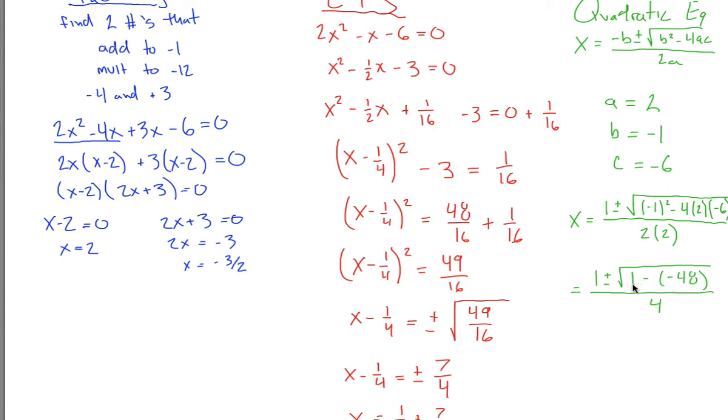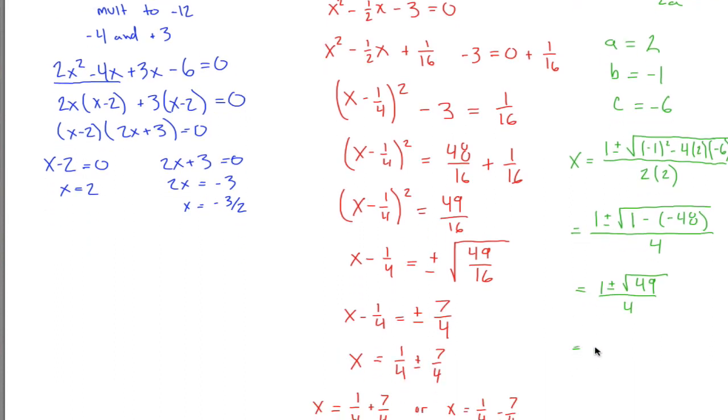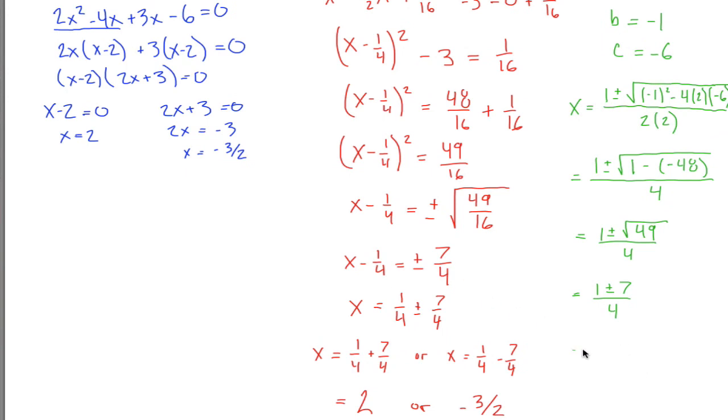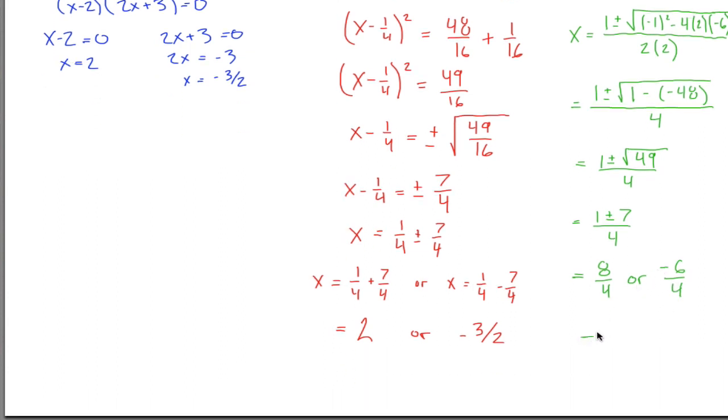So x = [1 ± 7]/4, the square root of 49. This looks very similar to what we have over here. We either get 8/4 or -6/4. 1 + 7 over 4 is 8/4, which is 2. 1 - 7 over 4 is -6/4, which is -3/2.